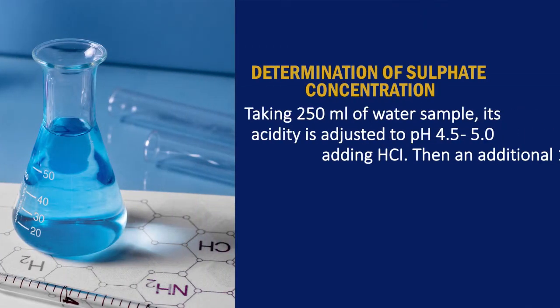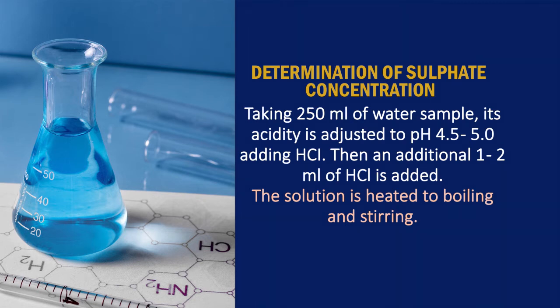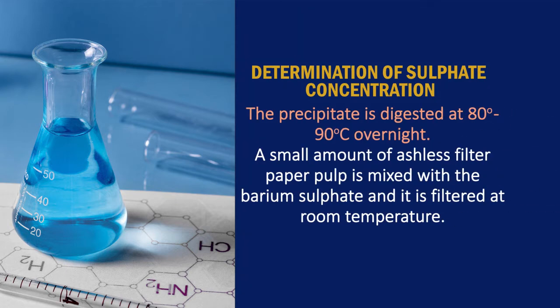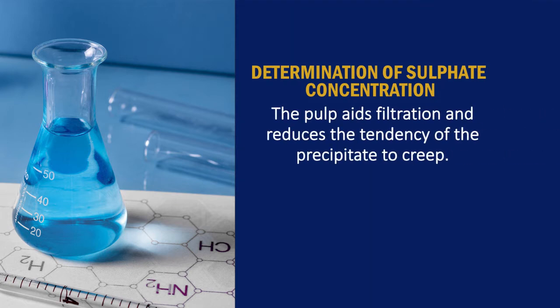Determination of sulfate concentration: 250 ml of water sample is taken and its acidity is adjusted to pH 4.25 by adding HCl. An additional 1 to 2 ml of HCl is added. The solution is heated to boiling with stirring. Warm barium chloride solution is added slowly until precipitation appears complete, then a further 2 ml of barium chloride is added in excess. The precipitate is digested at 80 to 90 degrees centigrade overnight, and a small amount of HCl filter paper pulp is added with the barium sulfate and filtered at room temperature.